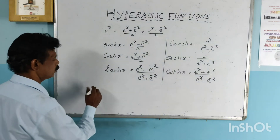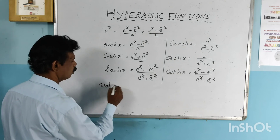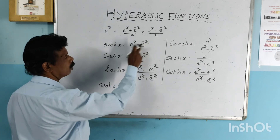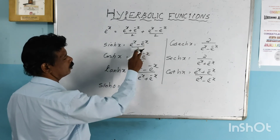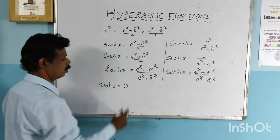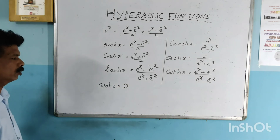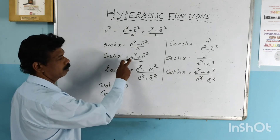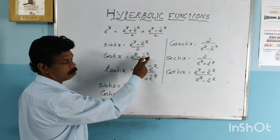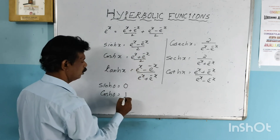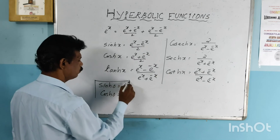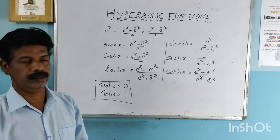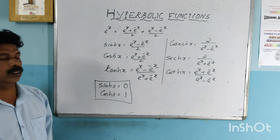What is the value of sinh(0)? e raised to 0 is 1, and e raised to minus 0 is also 1, so 1 minus 1 equals 0, and 0 by 2 equals 0. So sinh(0) equals 0. Then cosh(0): e raised to 0 is 1, e raised to minus 0 is also 1, so 1 plus 1 equals 2, and 2 by 2 equals 1. We must remember: sinh(0) equals 0 and cosh(0) equals 1.